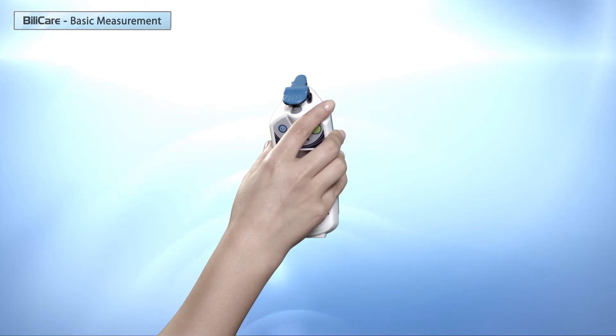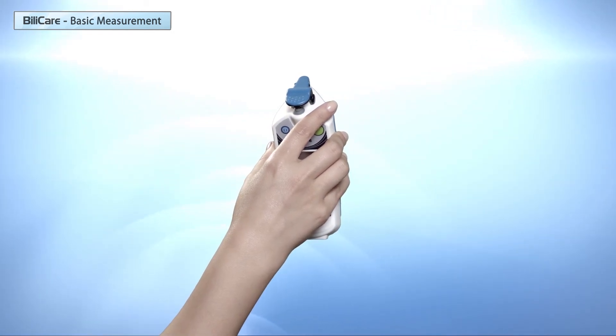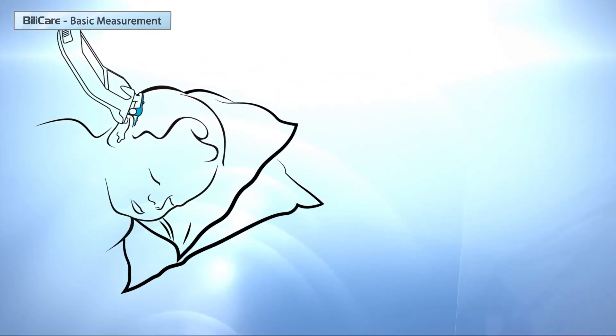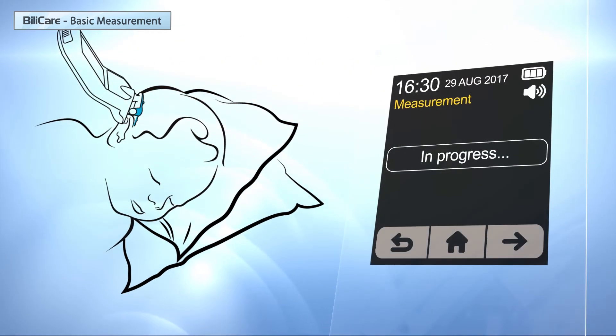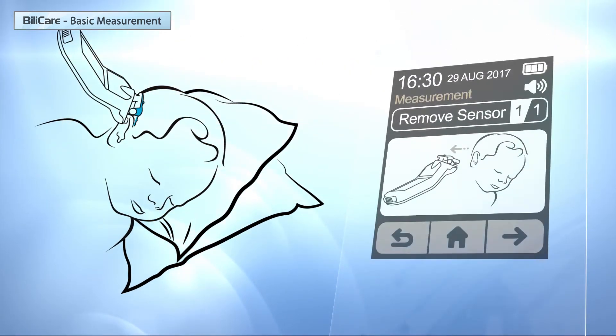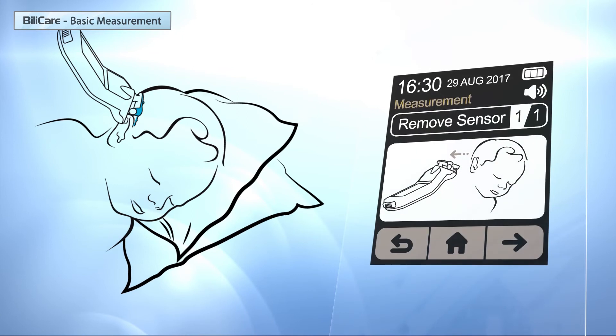After the sensor is placed, it is important to avoid touching the clip's lever. The measurement starts automatically and takes about two seconds to be completed. Once finished, a beep will be heard. Gently remove the sensor from the ear.